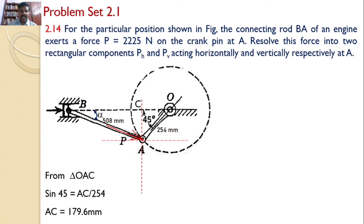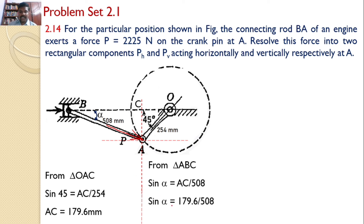Now I will consider triangle A, B, C to calculate the value of angle alpha. From triangle ABC, sin alpha equals AC divided by the hypotenuse, which is 508 mm. So sin alpha equals 179.6 divided by 508, giving alpha equal to 20.7 degrees.